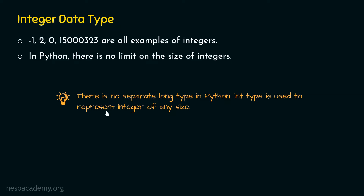The int type is used to represent integers of any size in Python. Also, you need to remember that in Python there is no need to explicitly specify the type. Python automatically understands the type of a value by seeing that value, so we do not have to specify the type explicitly.